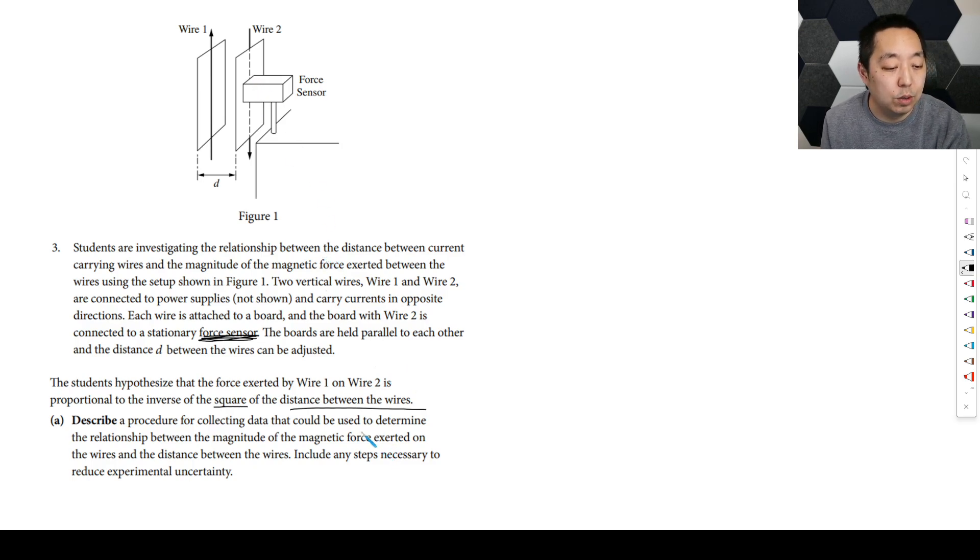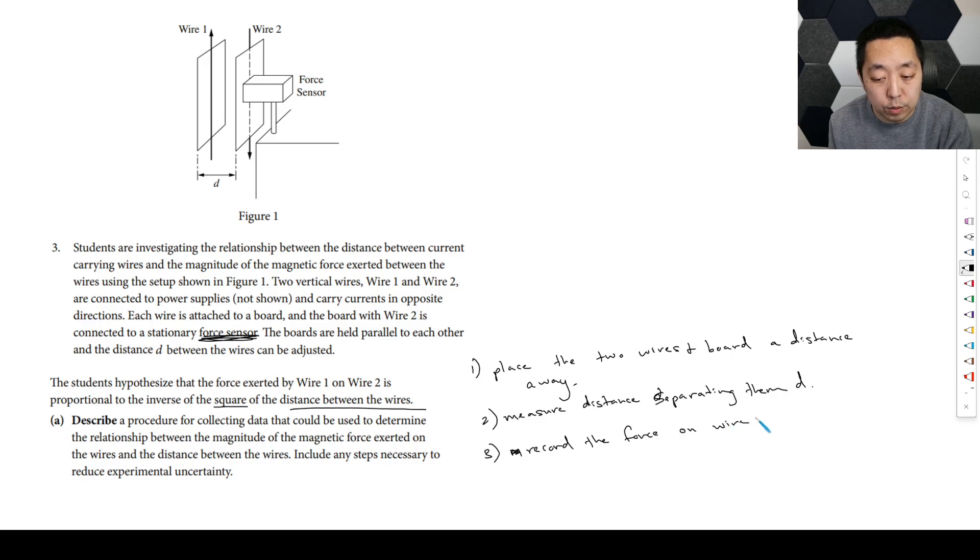Design a procedure that we're going to determine the relationship of the magnetic force exerted on the wires and the distance between the wires. So all you're going to do is place the two wires and board a distance away. You're going to measure the distance separating them, D. You're going to then record the force on the wires. And then all you want to do is make sure we repeat steps one through three with five different distances. How many do you do? Just do a few. I just say five.